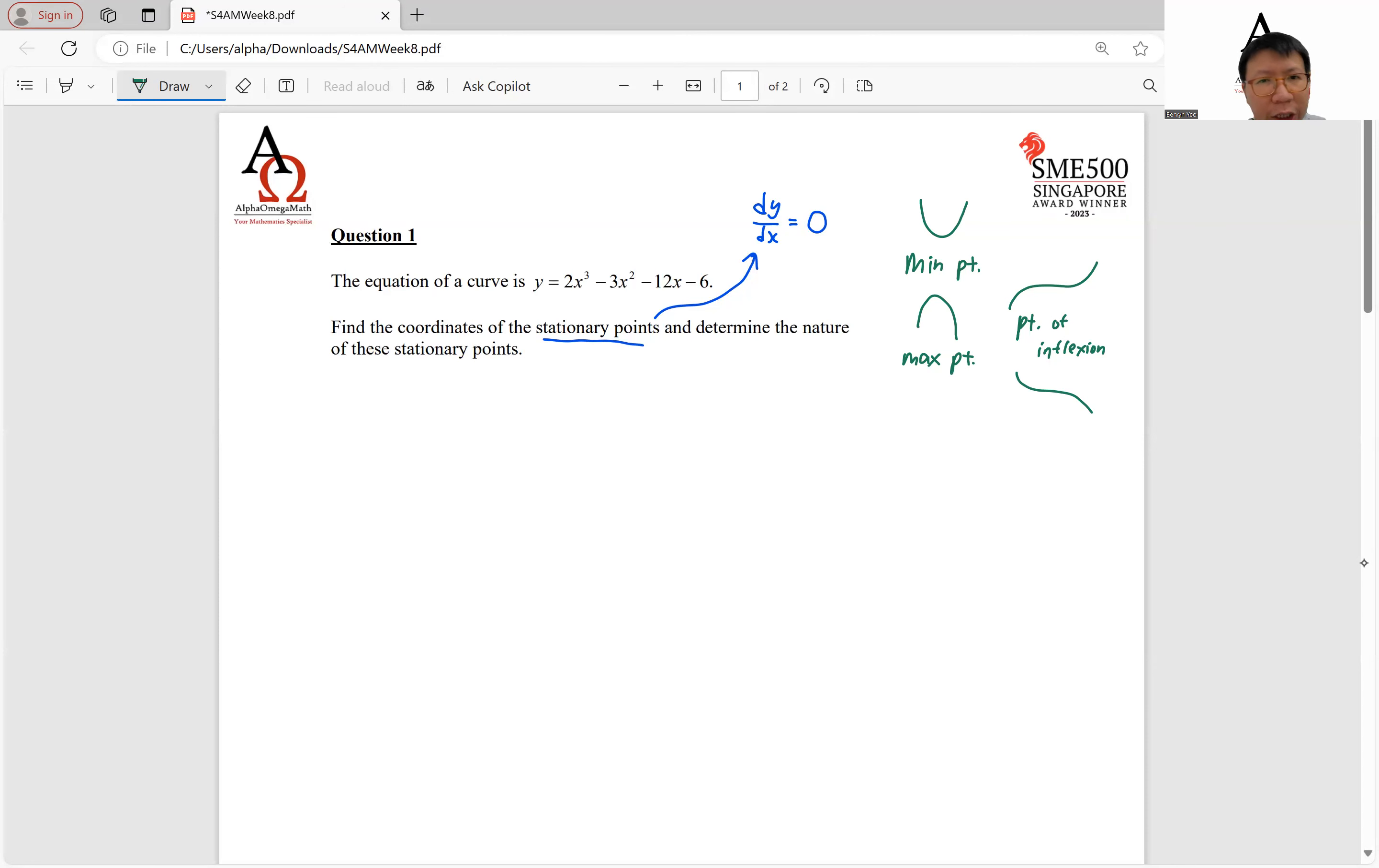So there are two tests that we can actually do to determine the nature of these points. Today, we'll focus on using the second derivative test to find this out. So first and foremost, let's proceed by differentiating the given curve function first. So we have dy over dx equals to 6x squared minus 6x minus 12.